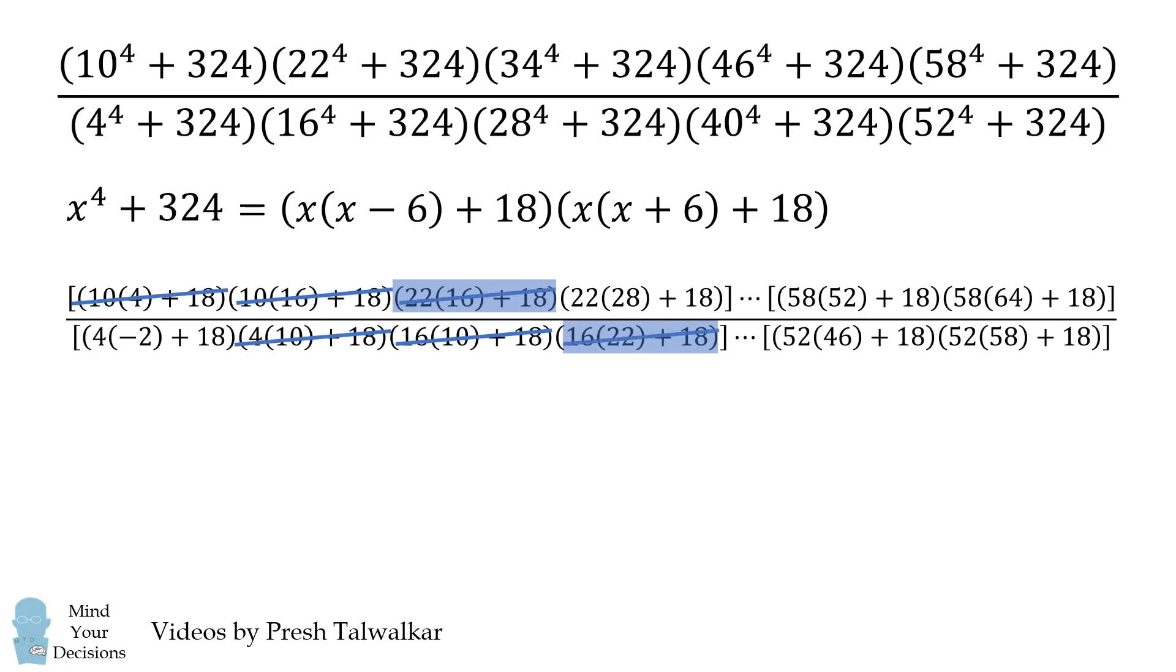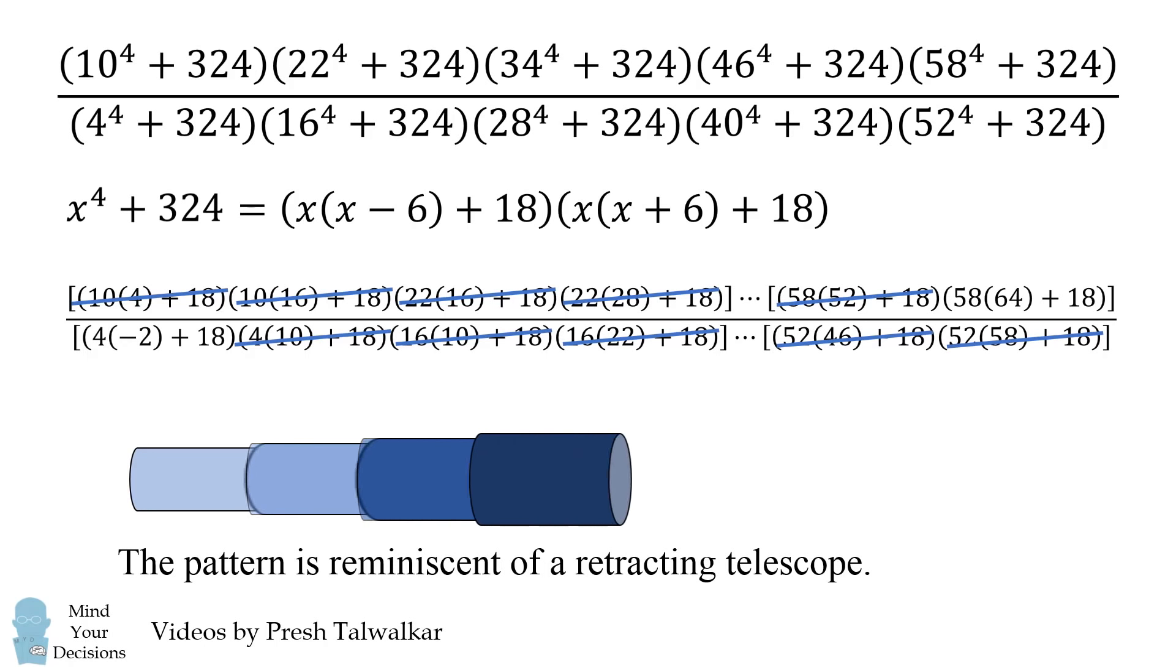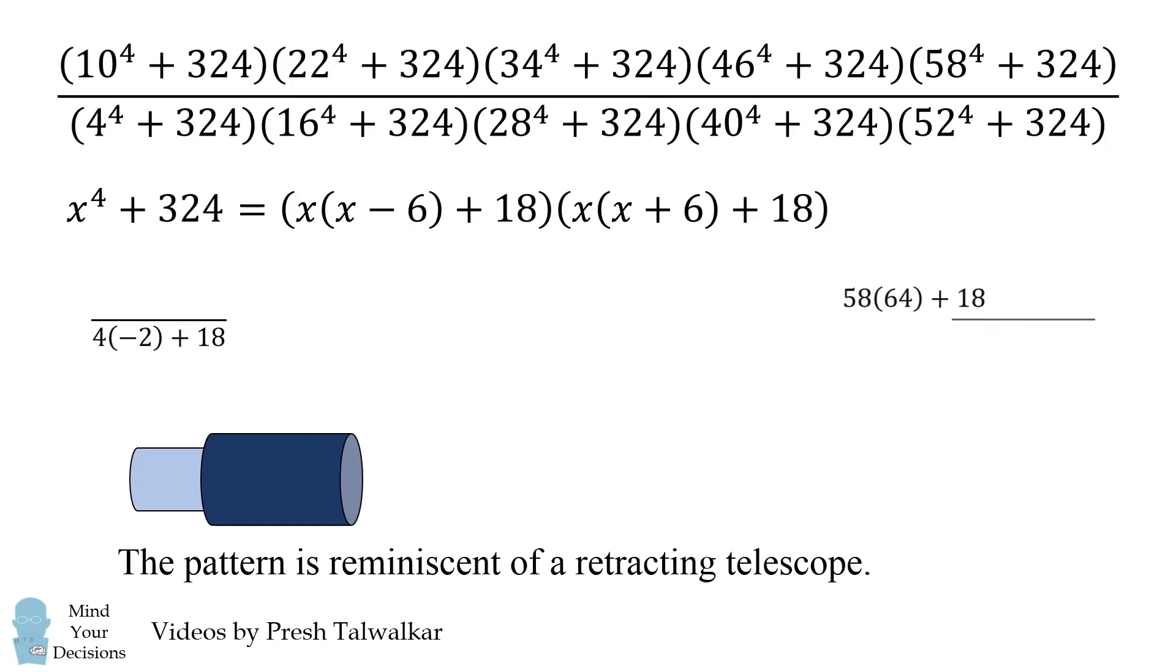So we're going to cancel out all of these terms, and it goes all the way until the very end. The only thing that survives is the very last term in the numerator and the very first term in the denominator. This kind of pattern is reminiscent of a retracting telescope, where the only thing that survives is the first thing and the very last thing. So our fraction simplifies to be just the following, and it's an example of a telescoping product.